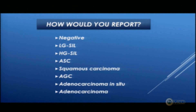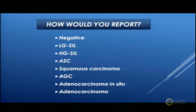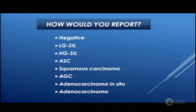How many people say negative? Nobody. How many say squamous lesion? Nobody. How many say glandular lesion? In glandular lesion, we have atypical glandular cell, adenocarcinoma in situ, adenocarcinoma. Atypical glandular cell — one, two, three, four, five. Adenocarcinoma in situ? Nobody. Adenocarcinoma? One, two, three, four, five.